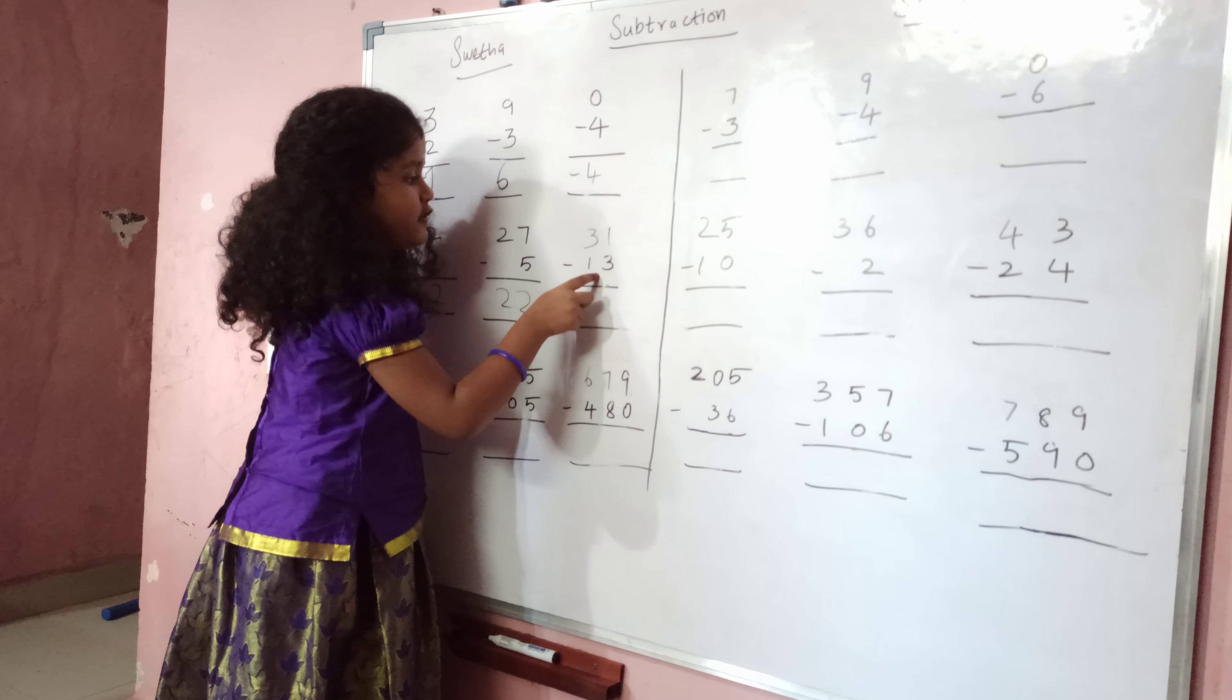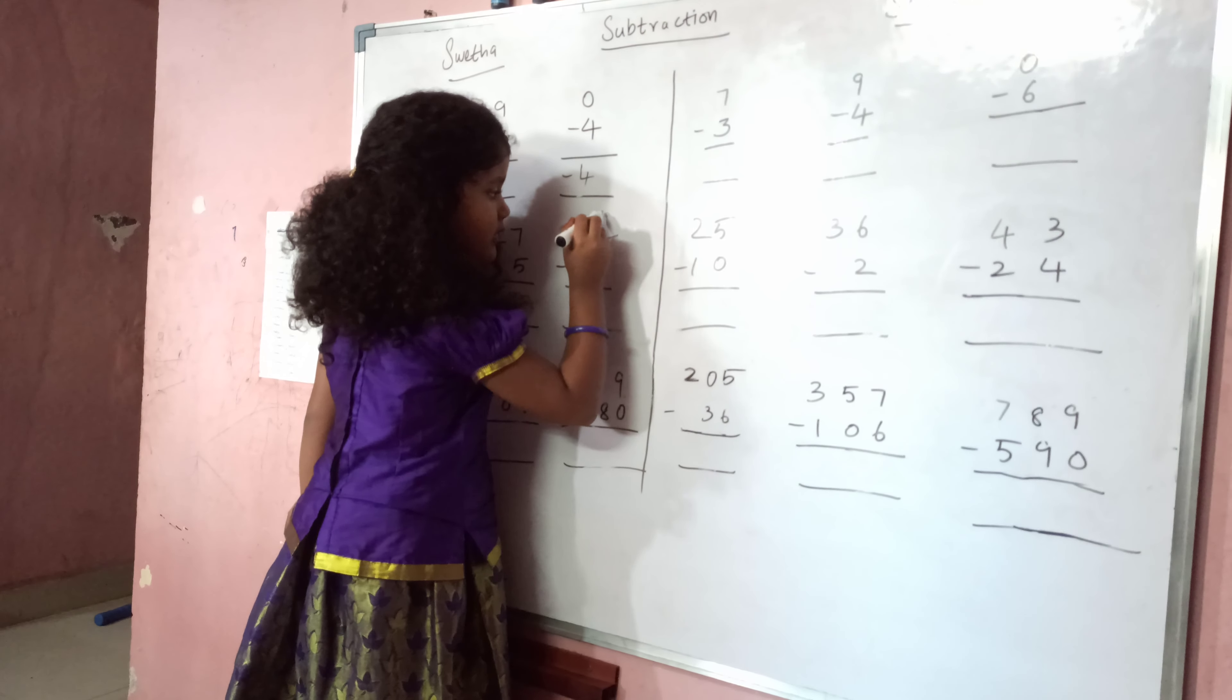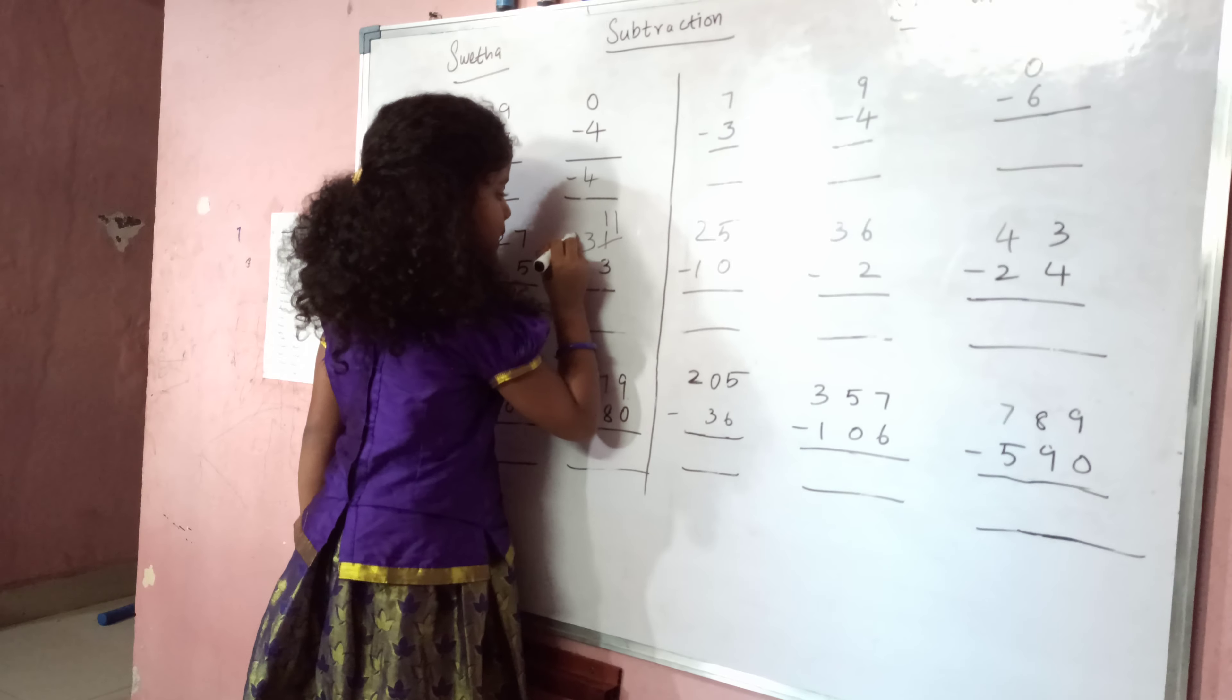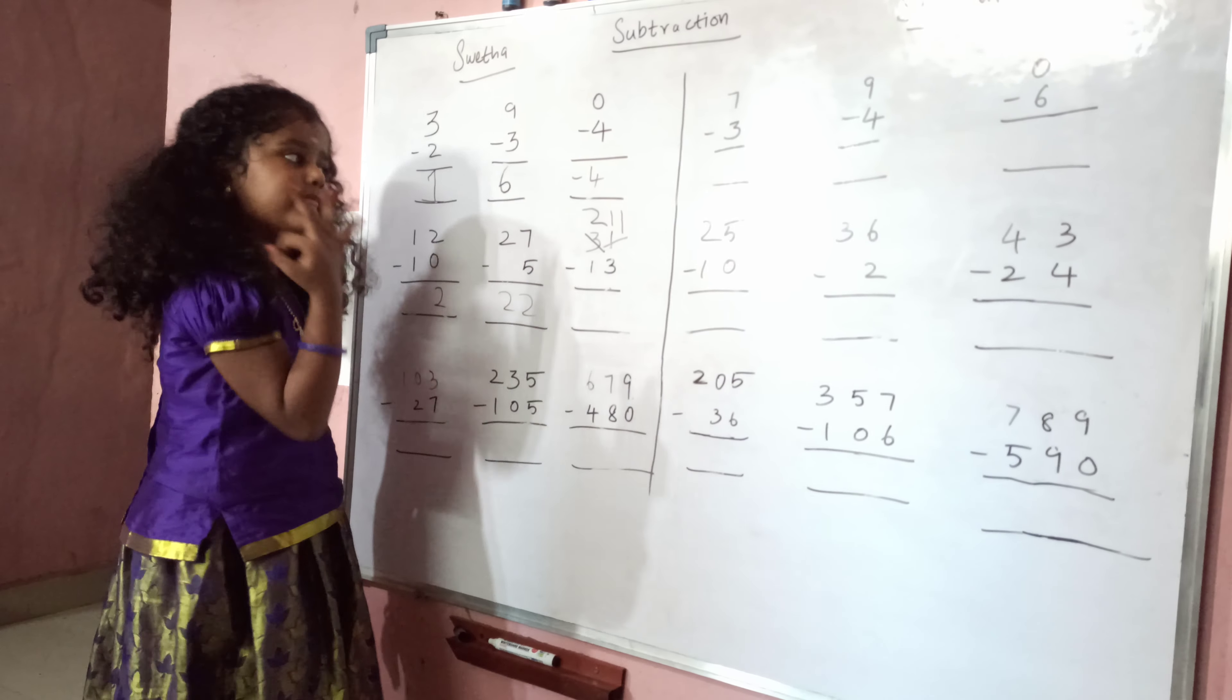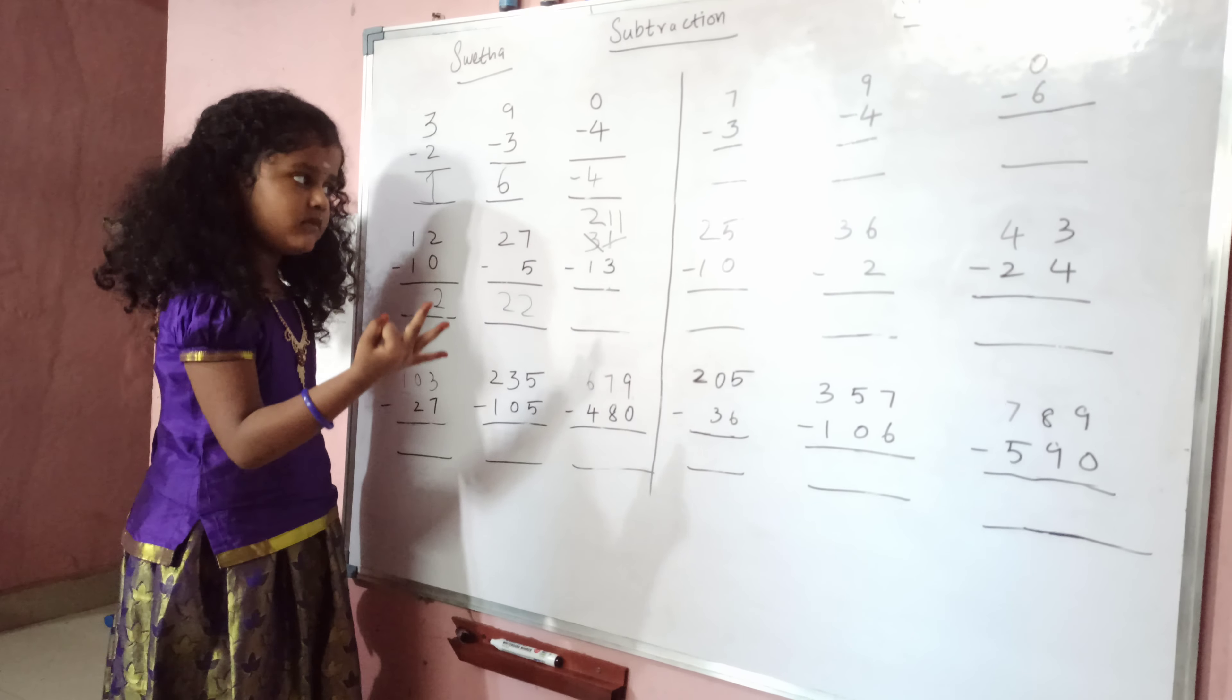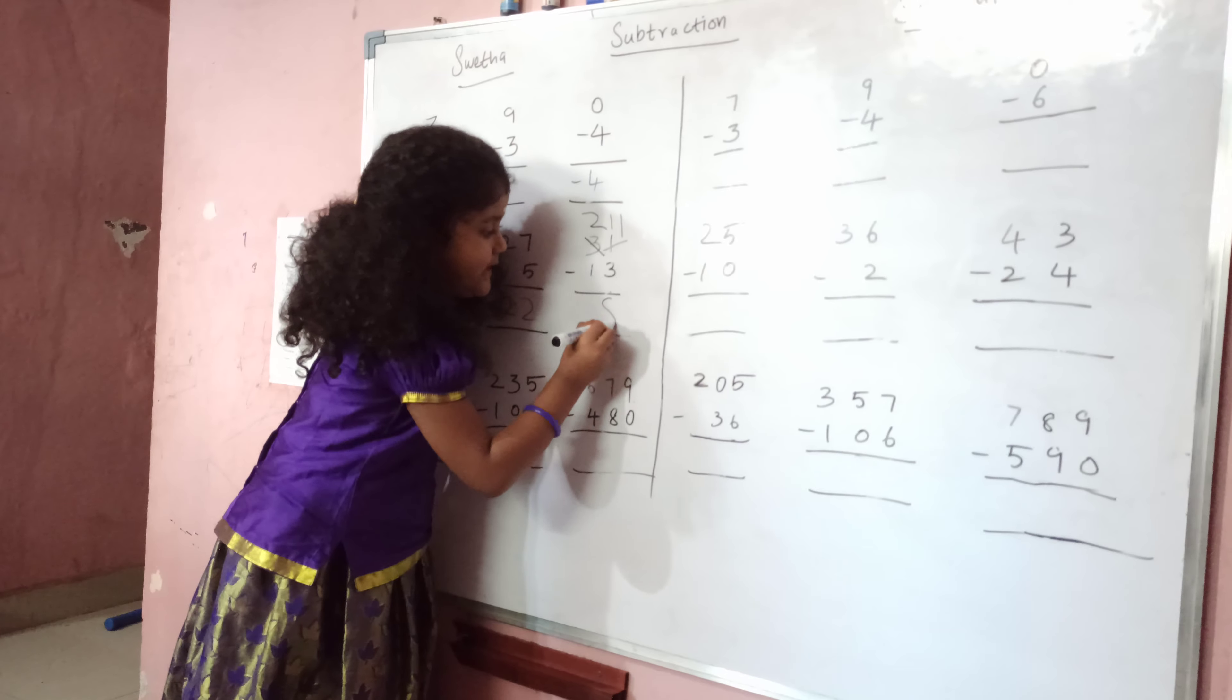Three is the bigger number, so borrow one. Eleven in the mind, three in the finger. Before eleven, ten, nine, eight. Eight is the answer.